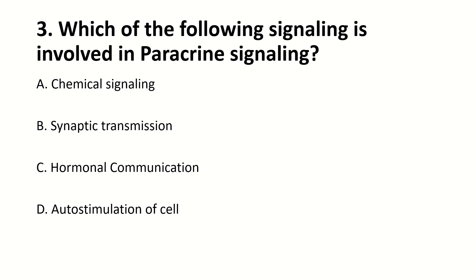Which of the following signaling is involved in paracrine signaling? Right answer is A — chemical signaling.